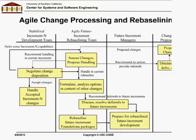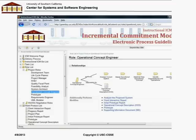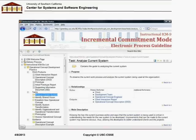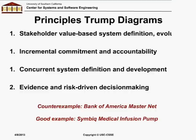Another thing the model includes is an electronic process guide that has been used in teaching it over the last 15 years, teaching each person on the team what their roles are, what their deliverables are, and what their interactions are with other people. The principles really trump the diagrams. What we'll now show is a counterexample of a system that didn't use these principles and ended up with a big failure, and a system that did use them and ended up with a success.